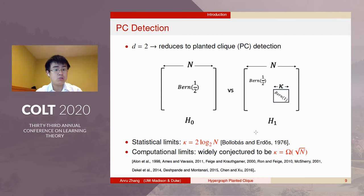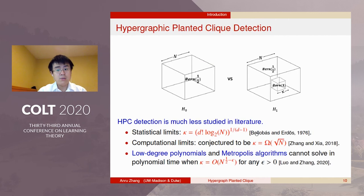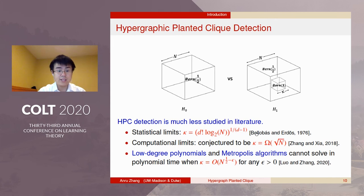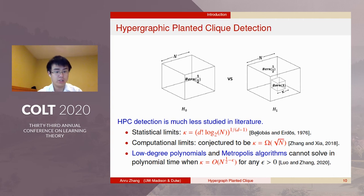Especially when D equals 2, HPC reduces to the well-regarded planted clique detection. But different from PC, HPC for D greater than or equal to 3 is much less explored in the literature. The computational limit was recently conjectured to be √n based on analysis of the spectral method. There is some evidence supporting this √n rate — for example, Luan and Chang showed that low-degree polynomials and the Metropolis algorithm cannot solve HPC in polynomial time when the clique size is significantly smaller than √n.